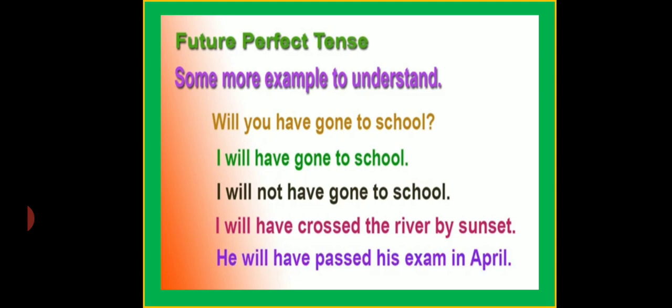Have a look. Will you have gone to school? — Interrogative. I will have gone to school — affirmative. I will not have gone to school — negative. I will have crossed the river by sunset — affirmative. He will have passed his exam in April — affirmative. Look at the last two examples: by sunset, in April — these are actions which will be completed before some stated time.